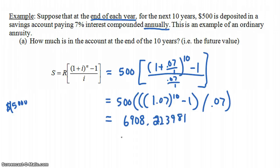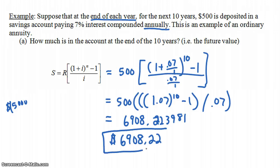So the future value — how much money is in this account at the end of ten years — is $6,908.22. That is indeed more than the $5,000 you put in. The interest earned is $1,908.22.